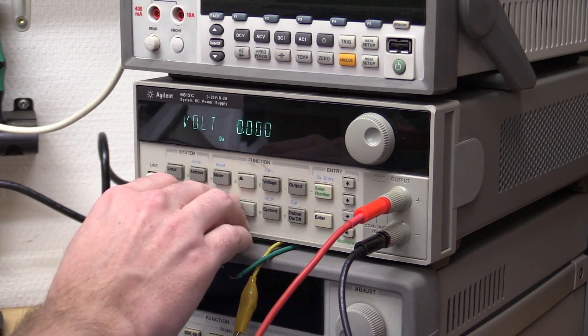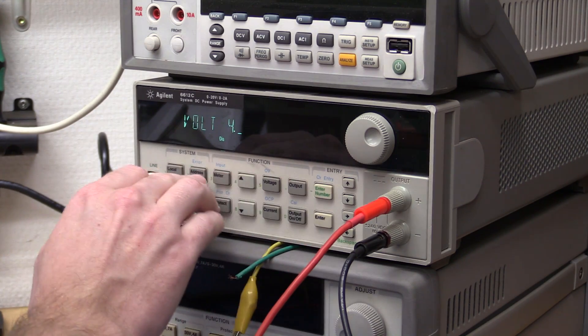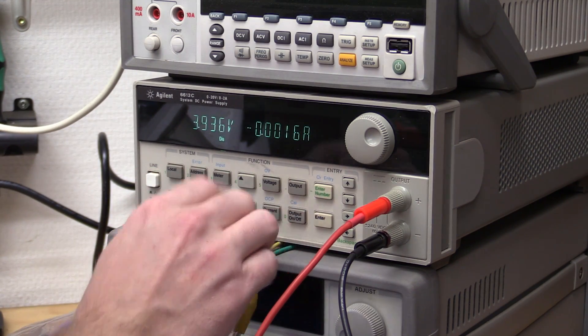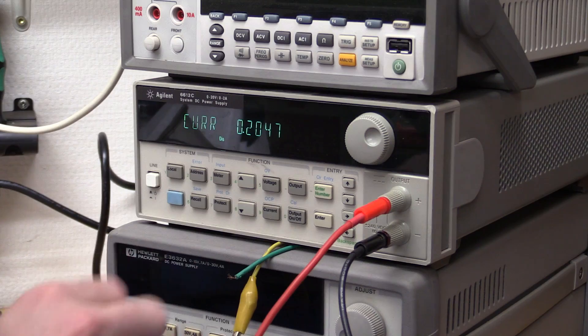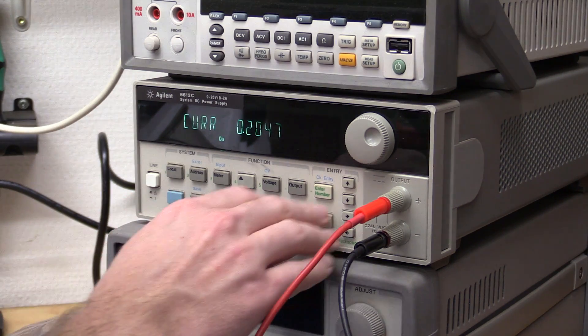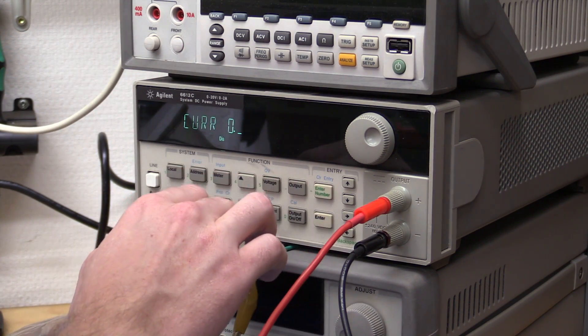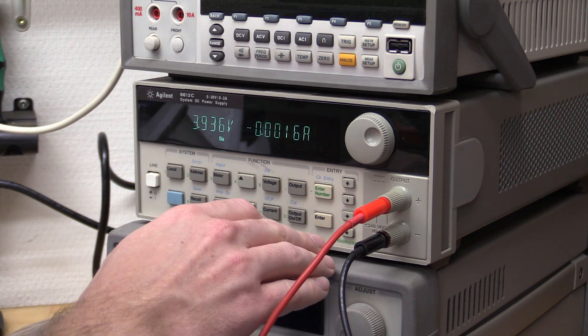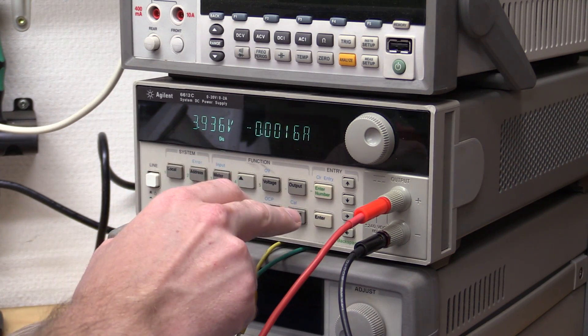So we'll set the voltage to 4.2 volts. And we'll set the current to about 1C, 900 milliamps. And we will turn it on.